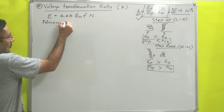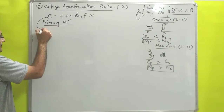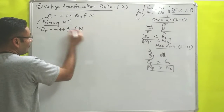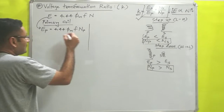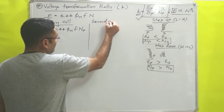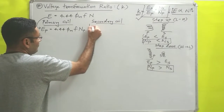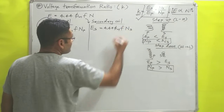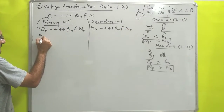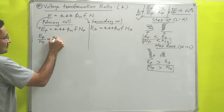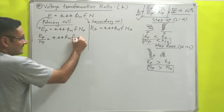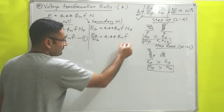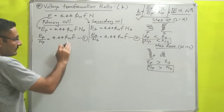Applying this equation for the primary coil: Ep = 4.44 × Φm × f × Np. Similarly, for the secondary coil: Es = 4.44 × Φm × f × Ns. We can rearrange these as: Ep / Np = 4.44 × Φm × f (equation 1) and Es / Ns = 4.44 × Φm × f (equation 2).